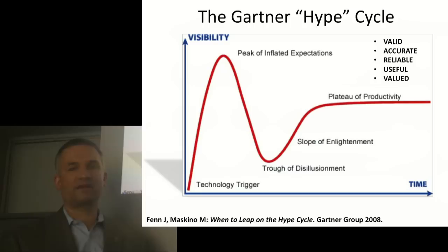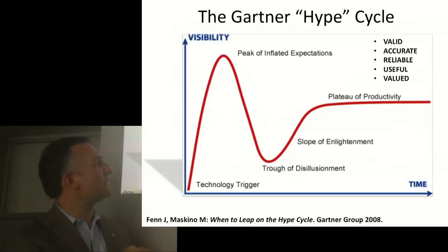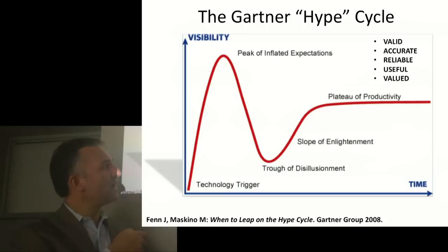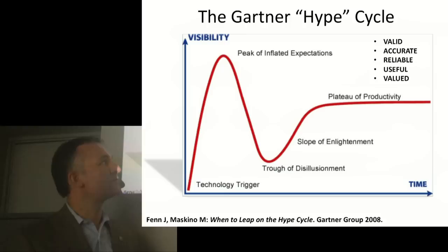Before we get too ahead of ourselves, it's important to keep in mind the Gartner Hype Cycle. Whenever we introduce new technologies, there's always this peak of inflated expectations, rapidly descending into this trough of disillusionment. In the ICT, mHealth, and eHealth world, exciting new technologies have come with substantial hype and promise, but the data and evidence have not managed to maintain that level of expectation, ending with abandoned technologies not used in mainstream health systems. Our goal as technologists is to migrate technologies worth taking out of this trough up into the plateau of productivity, based on evidence that they do work.